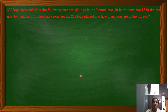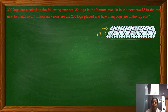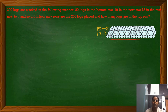The next problem is very interesting. 200 logs are stocked in the following manner: 20 logs in the bottom row, 19 logs in the next row above that, then 18 logs, and so on. In how many rows are the total 200 logs placed, and how many logs are in the top row?